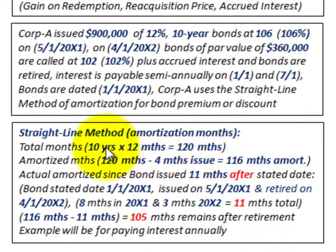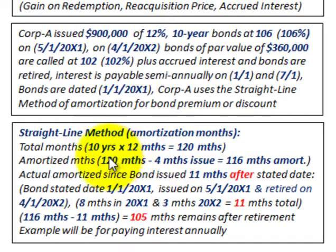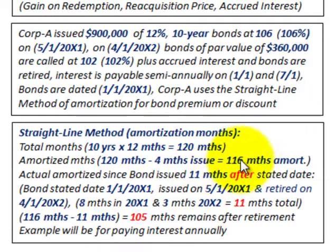Using the straight-line method, we have to break down the amortization on these bonds in terms of months. Total months: 10 years times 12 months equals 120 months. However, since the bonds were issued four months after the stated date of January 1st, they'll only be outstanding for 116 months — that's 120 minus 4. So the amortized months are 116, not 120.